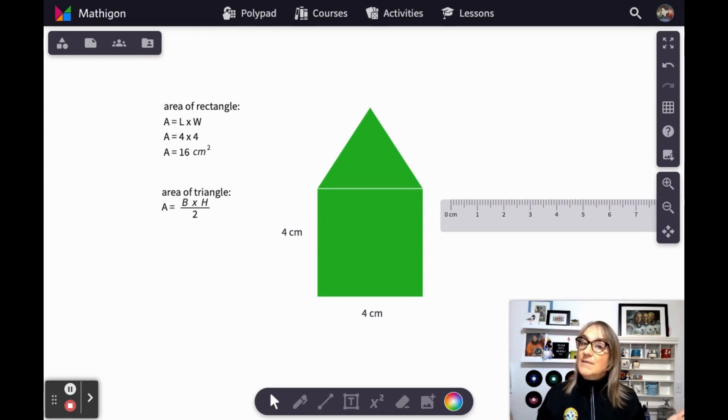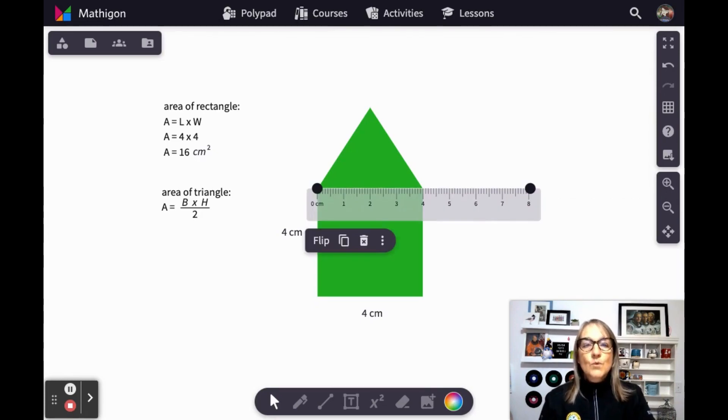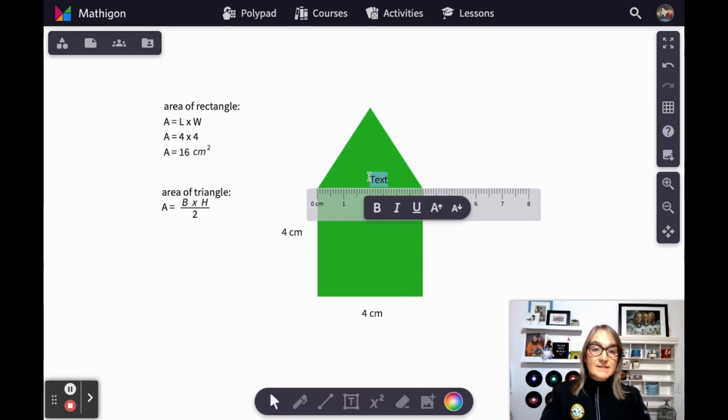So let's find the base and height of our triangle. Well, this probably isn't a surprise since we knew our square measured four centimeters on each side, and our triangle lines up exactly with the dimensions of the square. But it's always best to measure to be sure. And we find that the base of our triangle is four centimeters.